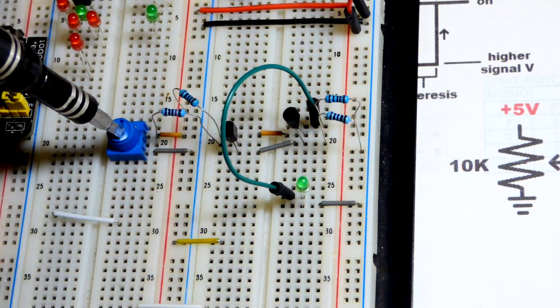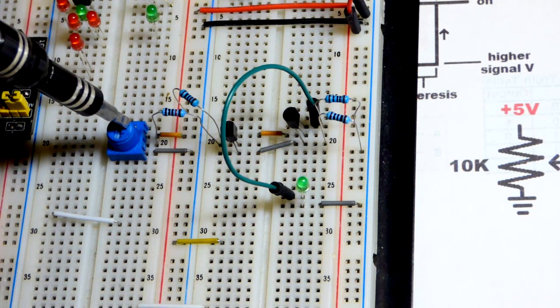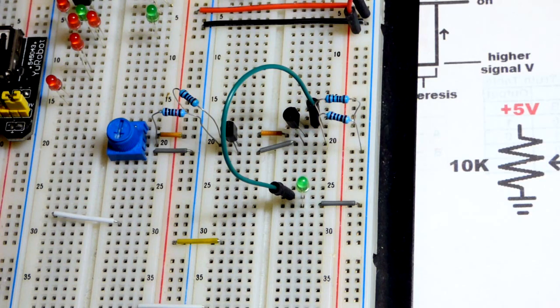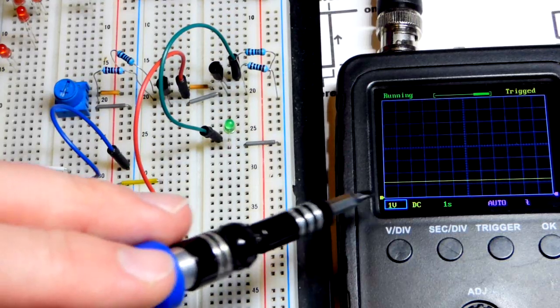If there's no hysteresis these trim pots kind of bounce back their voltage a little bit when you let go of them, and so it may flicker off right away if you're right on the edge.